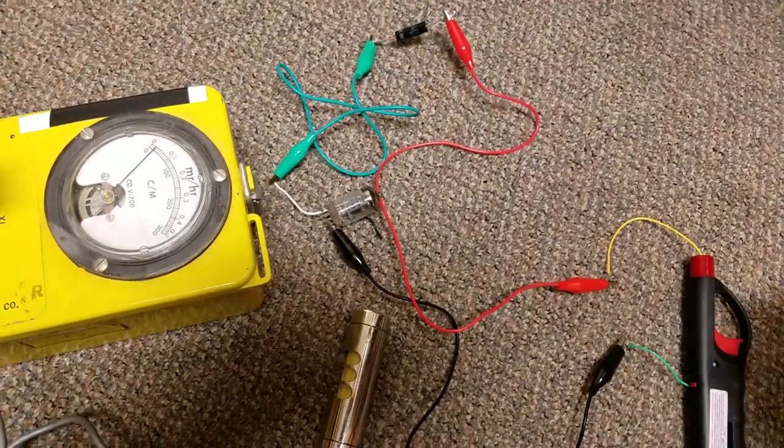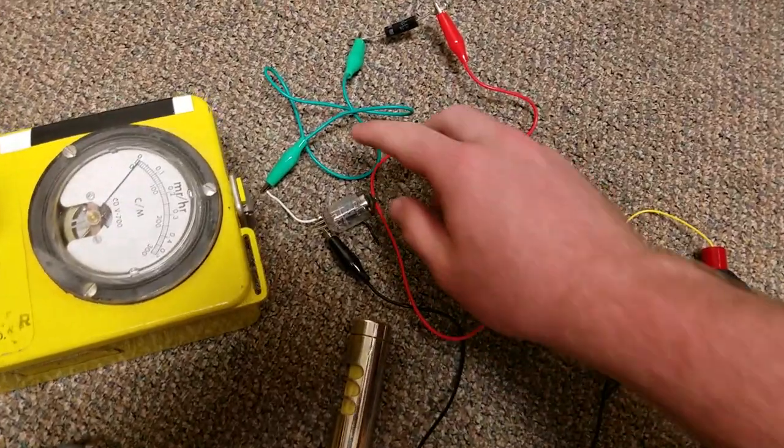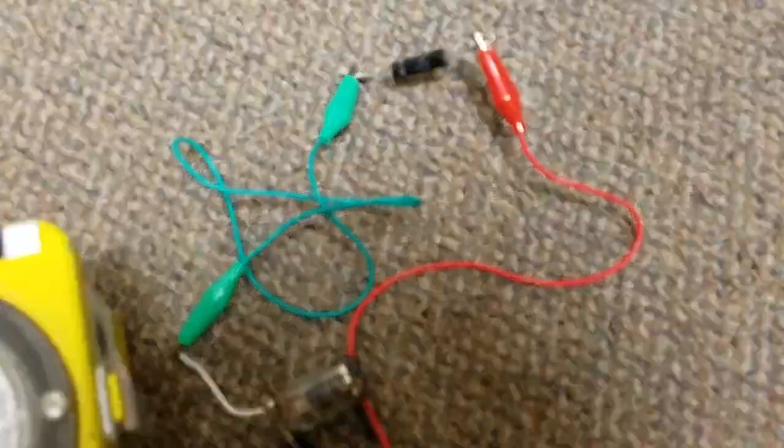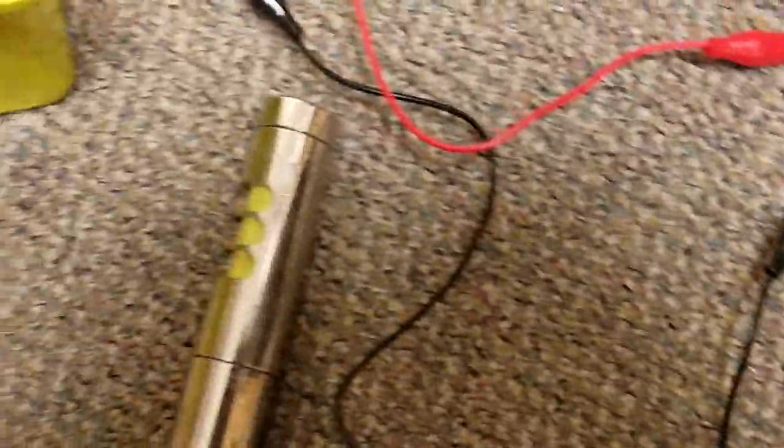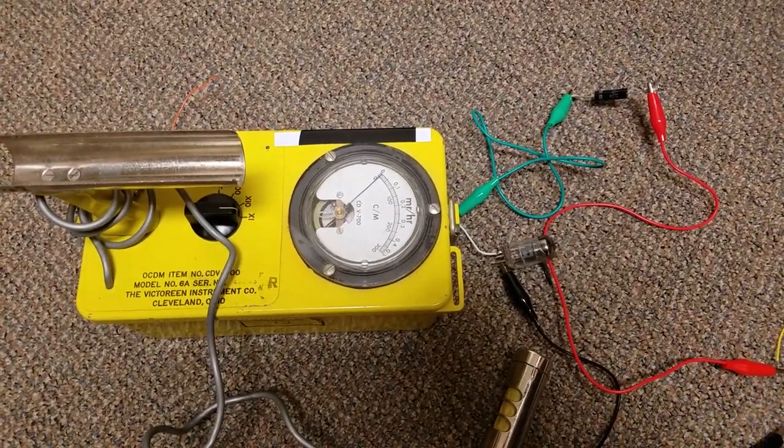Here's a quick demonstration of the barbecue lighter x-ray meter. I've got the 6J1 vacuum tube hooked up to the microwave diode, and over here is the barbecue lighter. Finally, this is a CDV 700 Geiger counter.